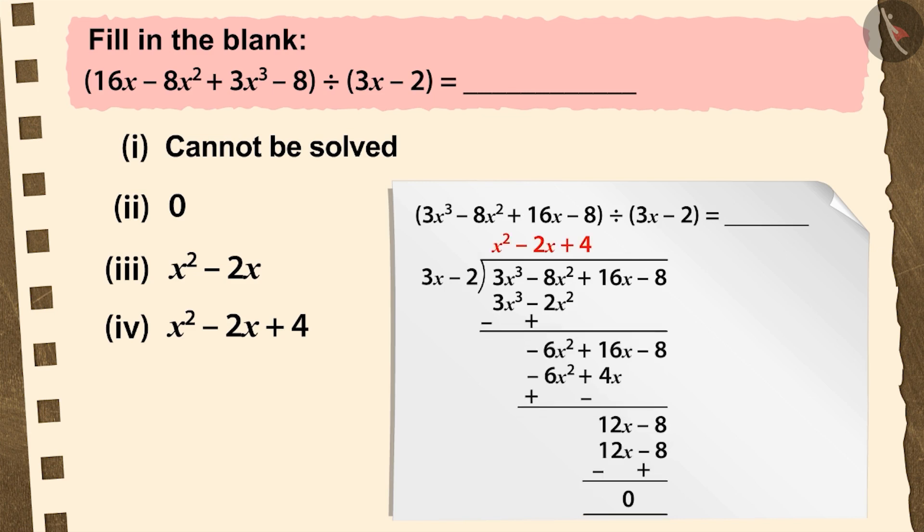By performing this, we get the quotient x squared minus 2x plus 4. Therefore, option 4 is the correct answer to fill in the blank.